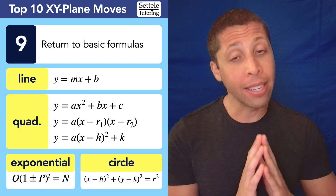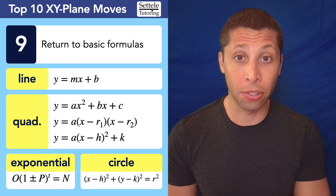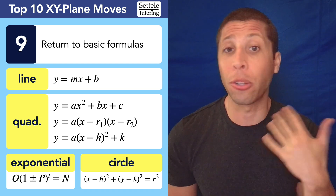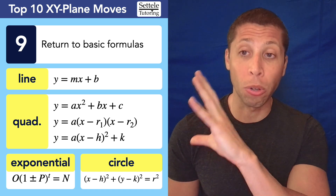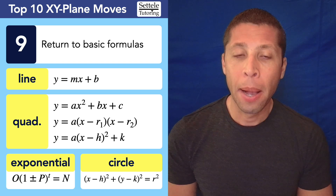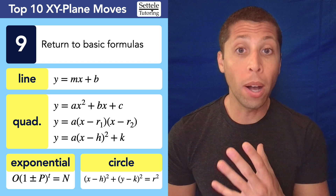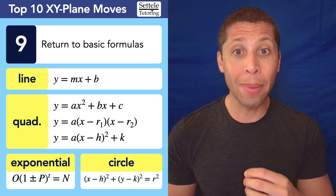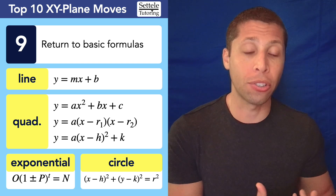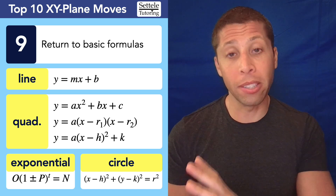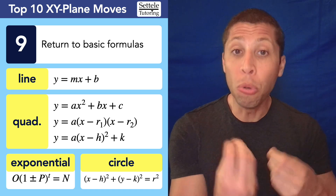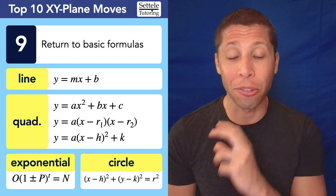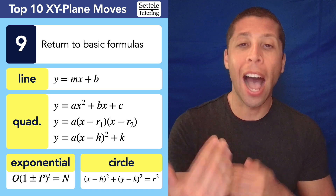Number 9: return to the basic formulas. Lines, quadratics — we have three different versions of that equation — exponentials, circles. These are the ones I use again and again on every single SAT. SAT questions handle these in two ways: they might give you an equation and expect you to interpret it, pulling out the center or radius, or they tell you the center or radius and expect you to build the equation yourself. Sometimes I'll just write x minus h squared plus y minus k squared equals r squared on my scratch paper because I know it's going to help.